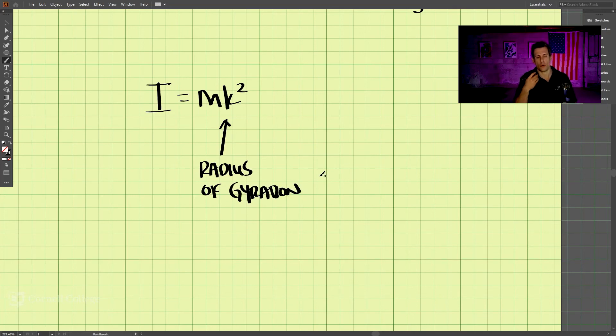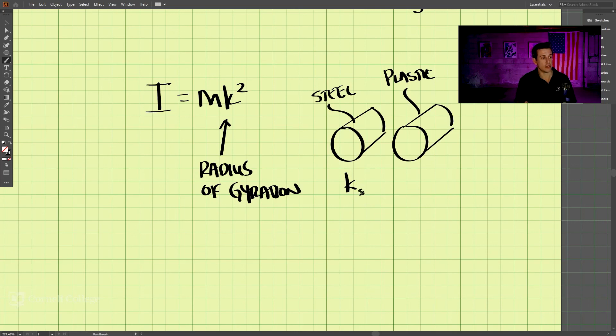So why would a problem or someone give you the radius of gyration instead of just giving you the mass moment of inertia? Well, the radius of gyration factors out the mass from the equation. For example, let's say we have two objects that have the exact same shape. You can think of two cylinders. They have the exact same shape. But one is made out of steel and one is made out of plastic. The steel radius of gyration is going to equal the plastic radius of gyration because it's just based on the shape of it.